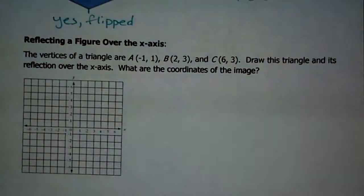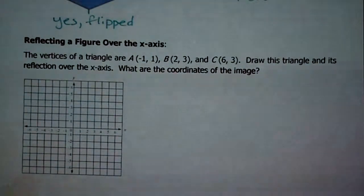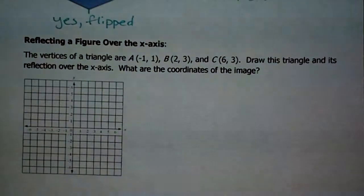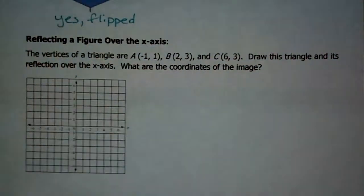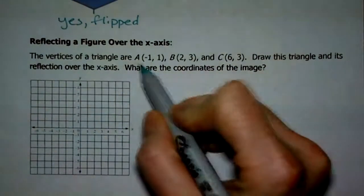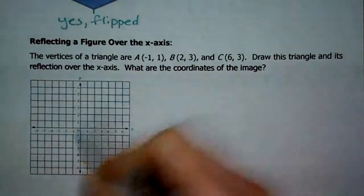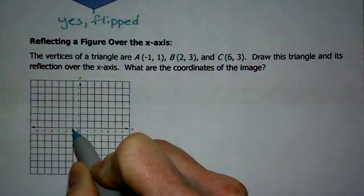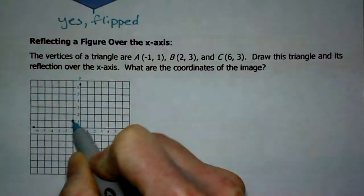So now I want you to be able to reflect a figure over the x-axis. It says the vertices of a triangle are, and I give you the vertices of a triangle. That means that we need to create this original picture. So let's do that. Point A is negative 1, 1. So start at the origin. Negative 1 means left, and positive 1 means up. So that's A.